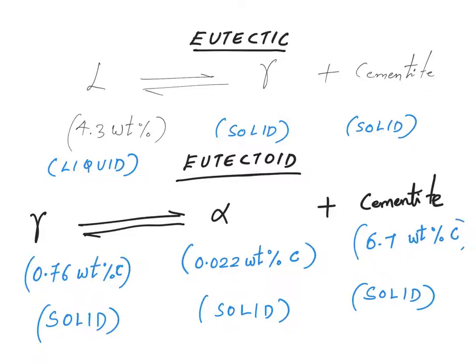We will talk about the details of all these things in the coming video. For the time being, these are the two very important points: the eutectic and eutectoid points in an iron-carbon phase diagram.